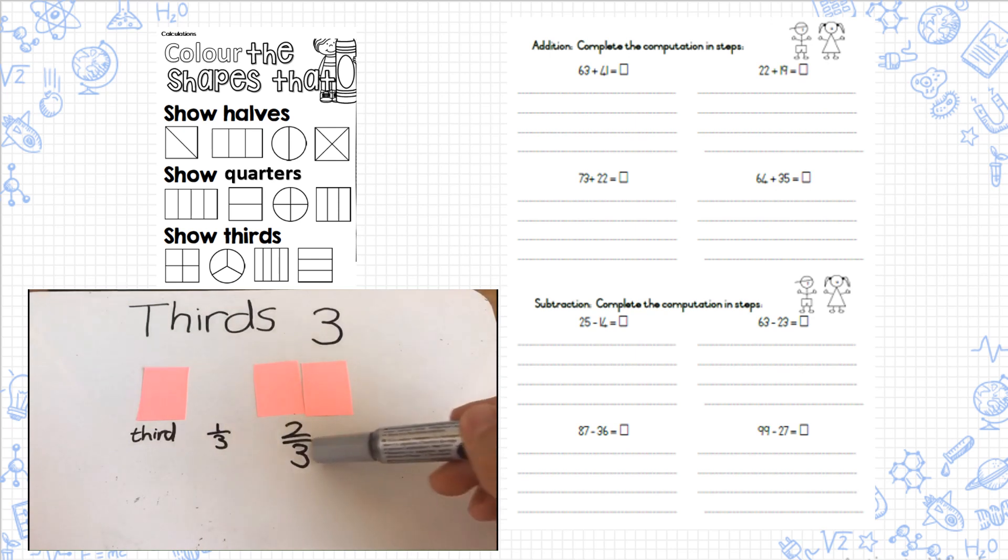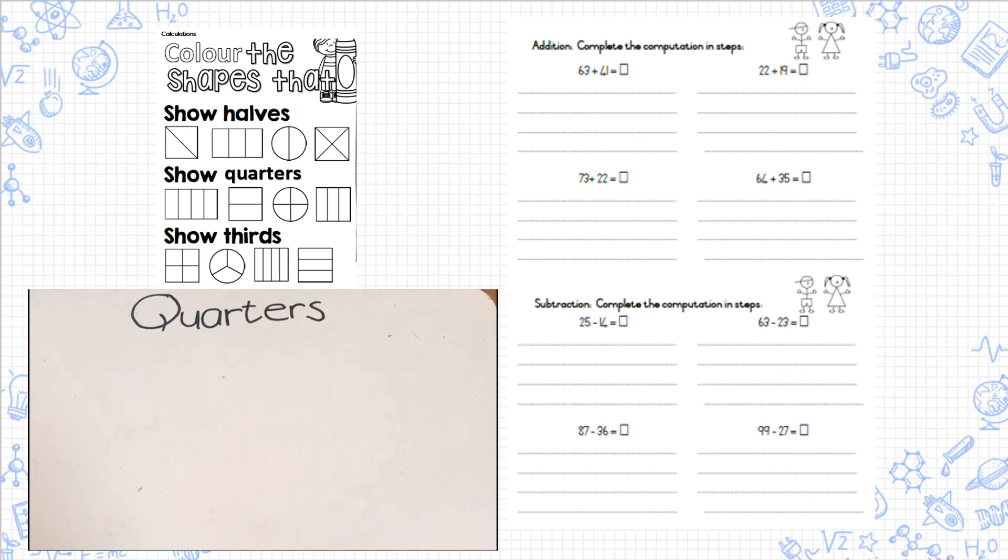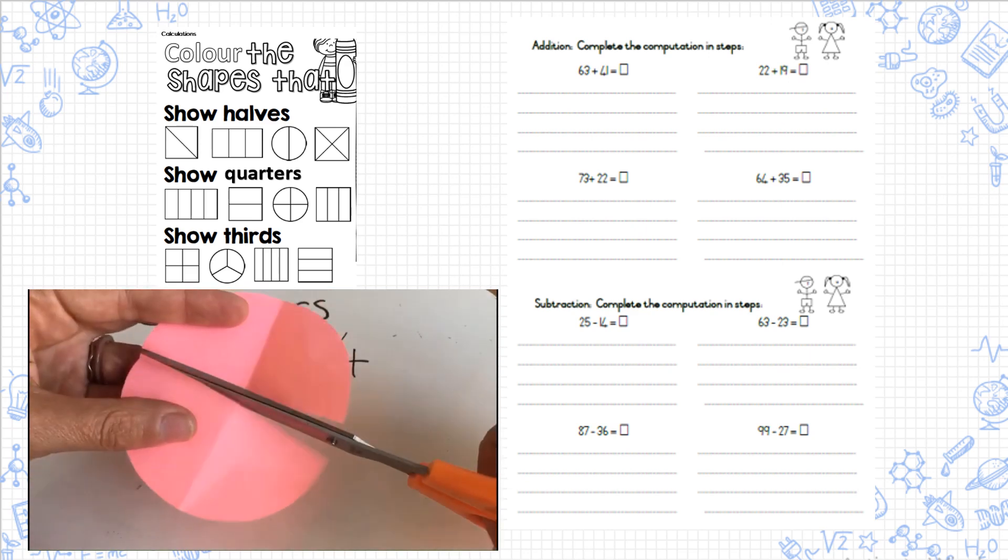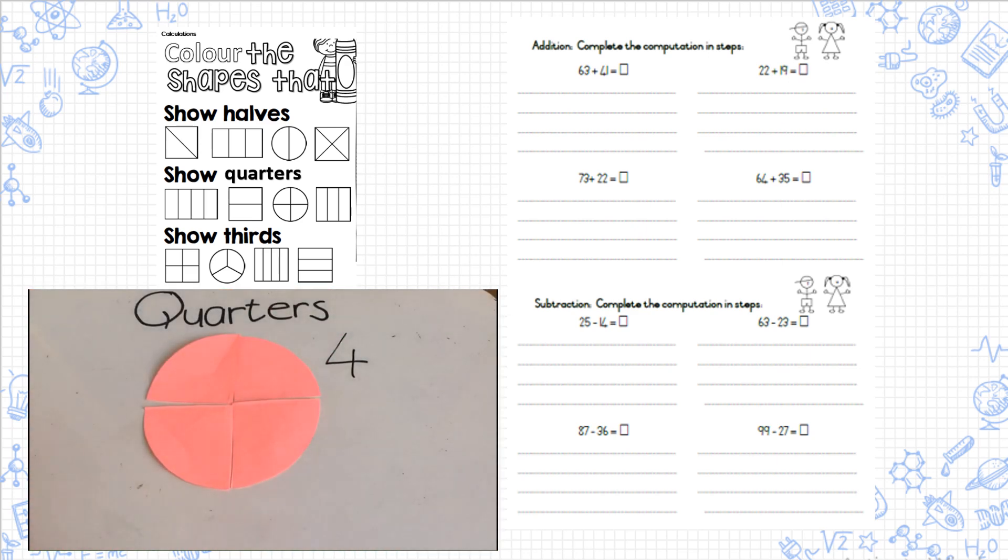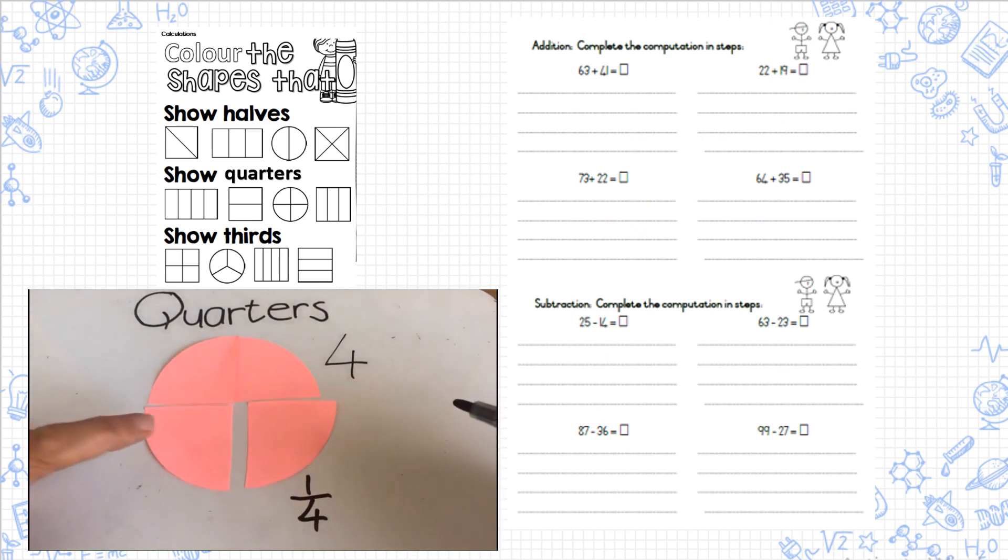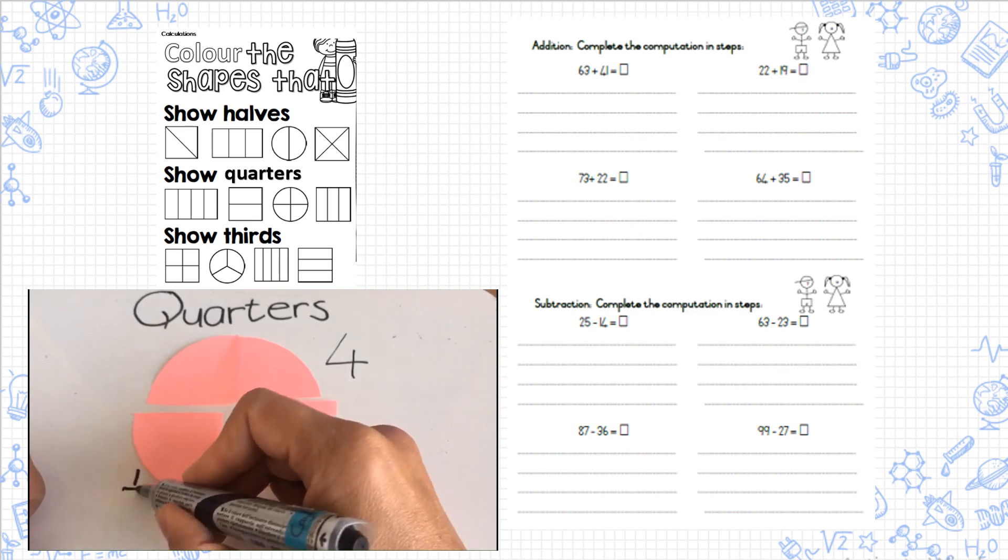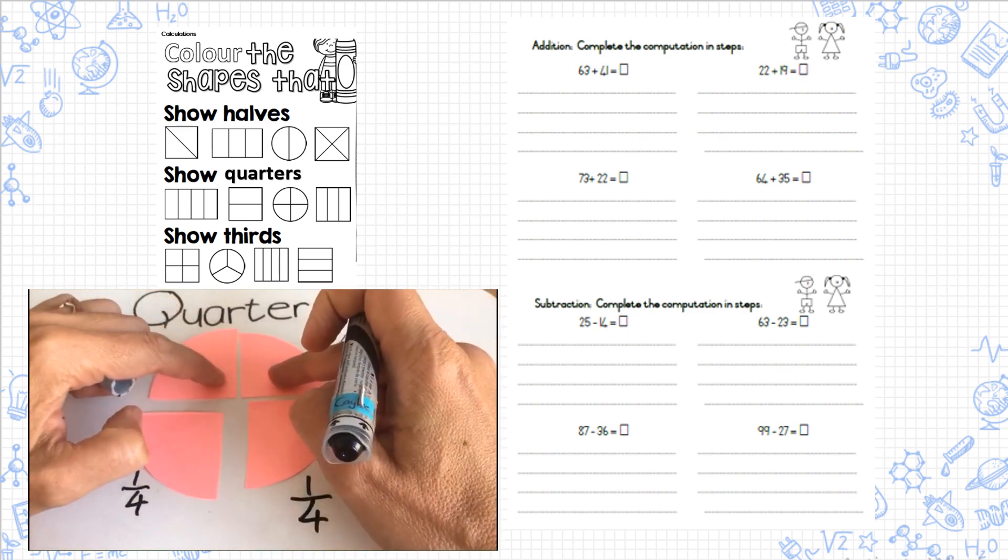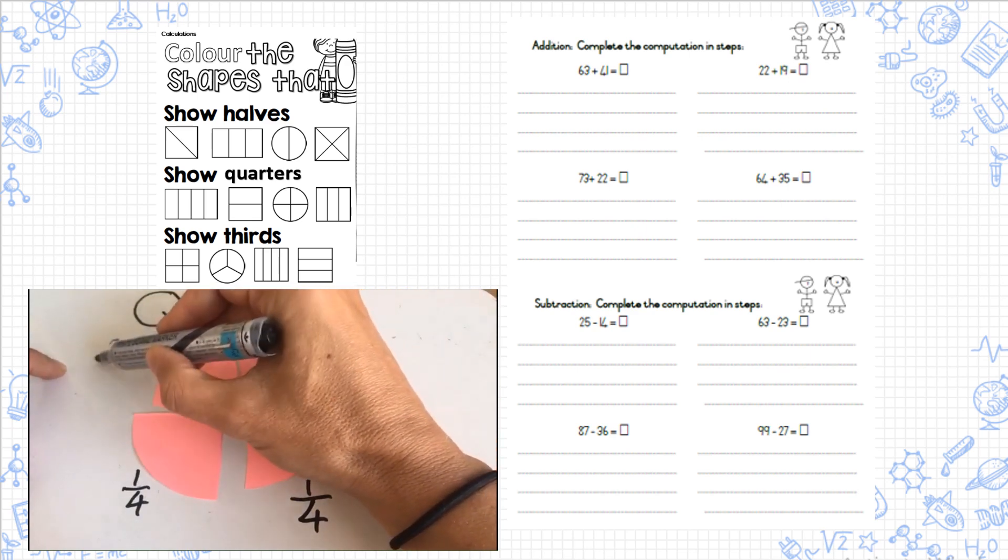The bottom number almost tells me the total number of parts and the top number how many I've got of them. Quarters means I'm going to divide it into four parts. Okay, so there's my quarters. Remember I had one whole and I broke it into smaller parts, and I call them quarters or like this: one will be one of the four pieces, this one will also be one of the four pieces, and if I keep those two together it will be two quarters.